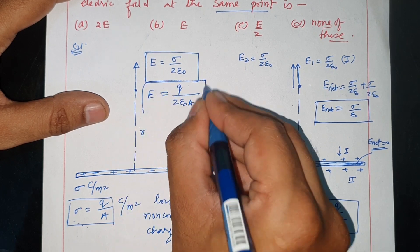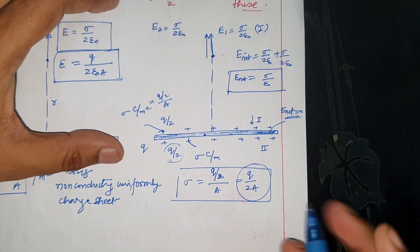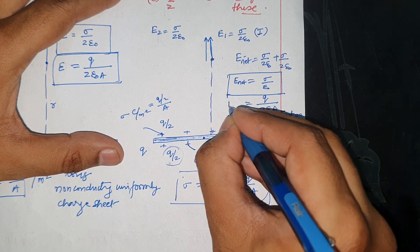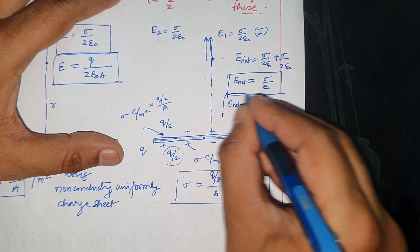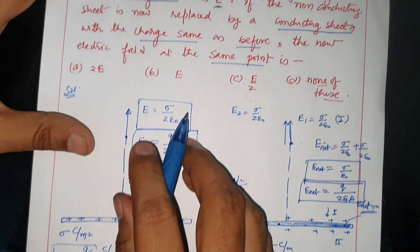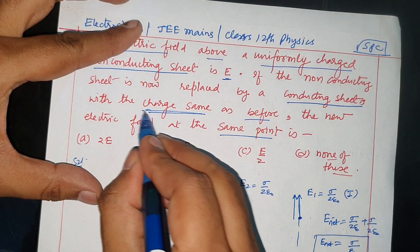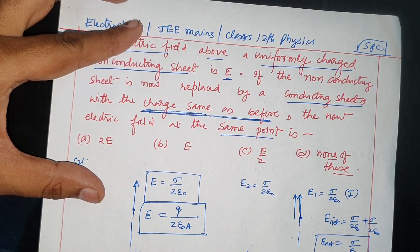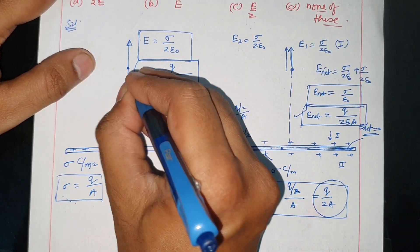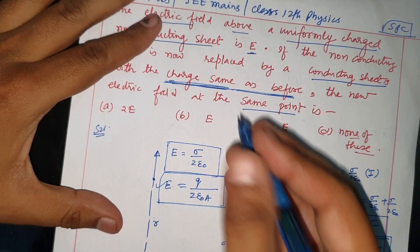So the net electric field for the conducting sheet = 2 × (Q/2A)/(2ε₀) = Q/(2ε₀A). For the non-conducting sheet, E = Q/(2ε₀A) as well. Both electric fields at the same point are equal. Therefore, the answer is E — the electric field remains the same.